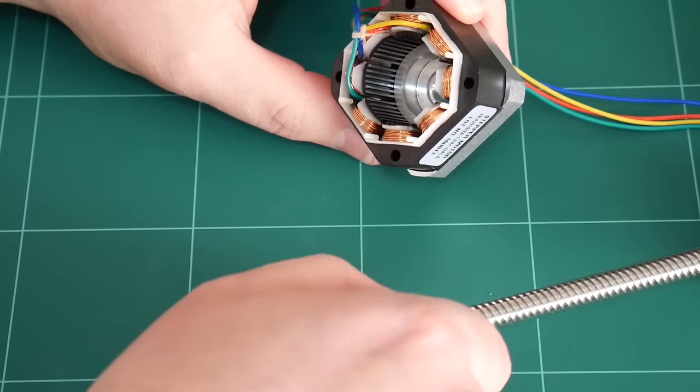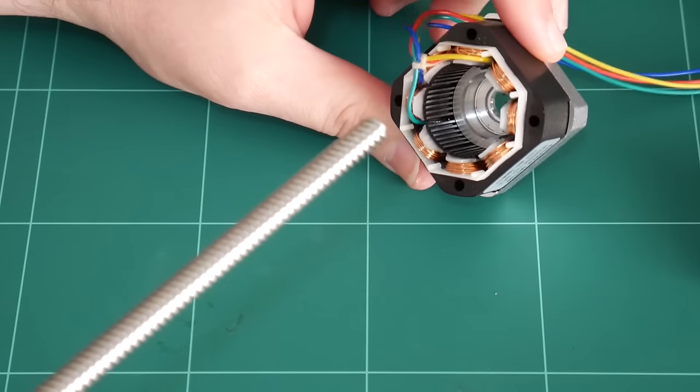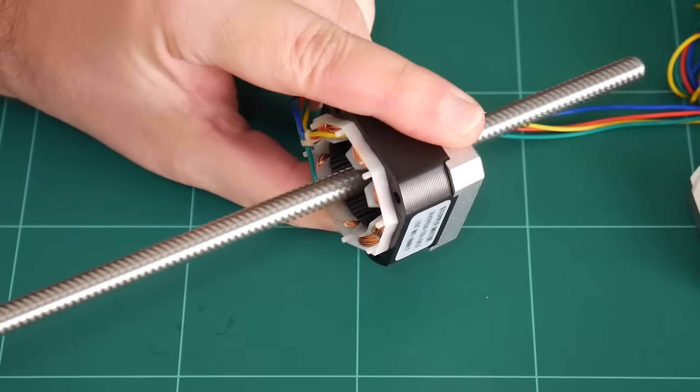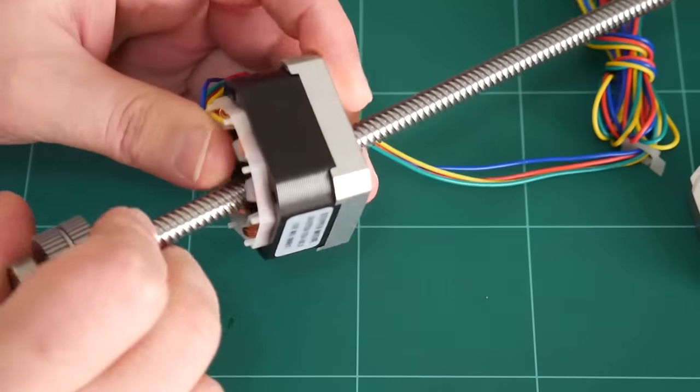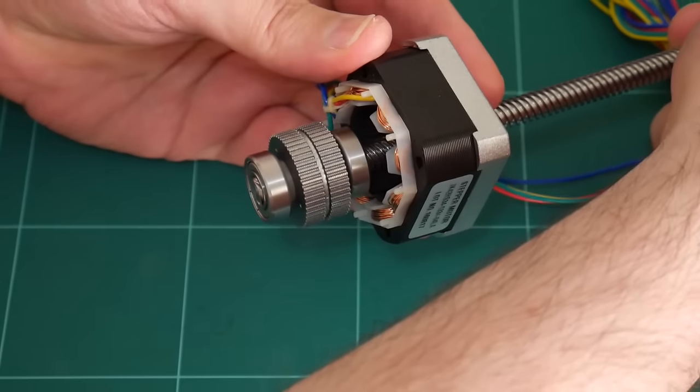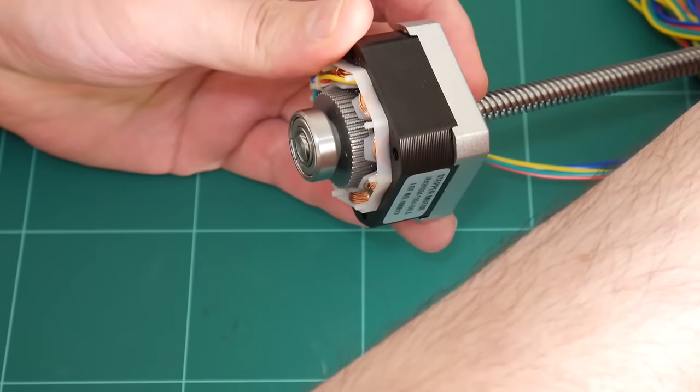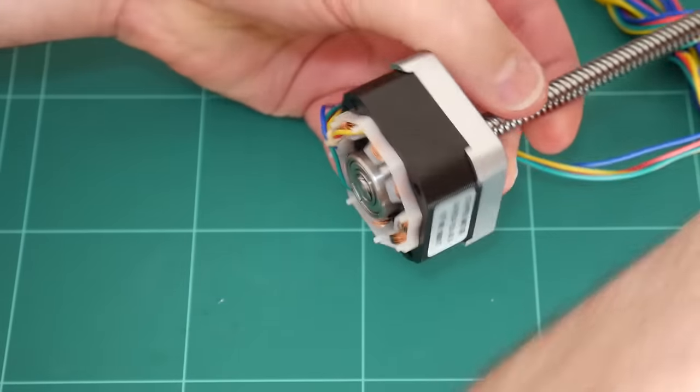We'll grab the main motor body. We'll insert the lead screw through the top of the motor. Like that. Push it through. Hold it straight. Line up the rotor magnet into the stator. Lock it in.